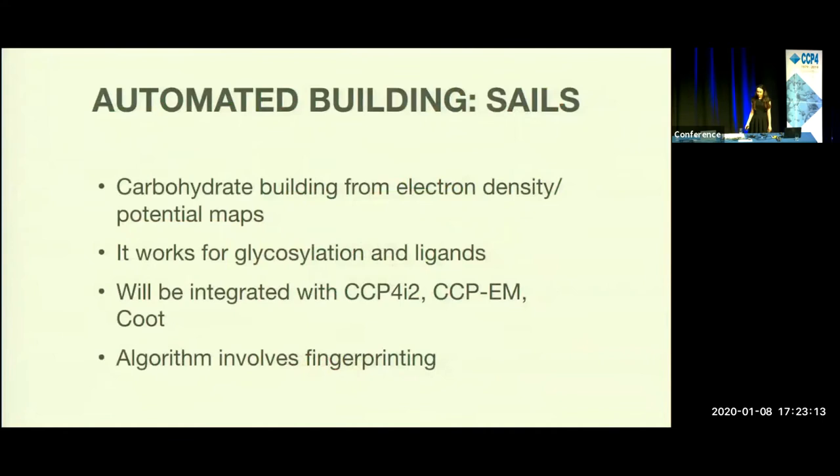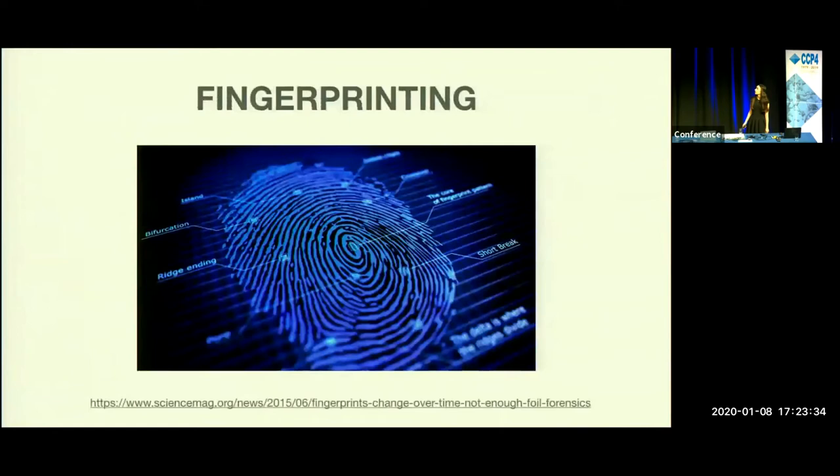In order to solve these issues, we are proposing CELS, which is software for building carbohydrates from electron density and electron potential maps. It works for glycosylation and ligands. It will be integrated with GUIs such as CCP4I2, CCPEM, and COOT. And its algorithm involves fingerprinting.